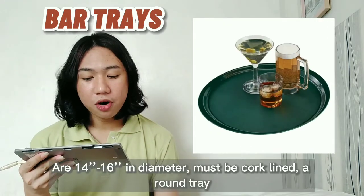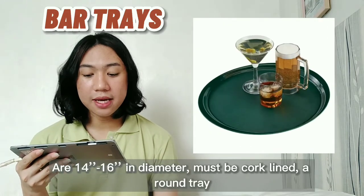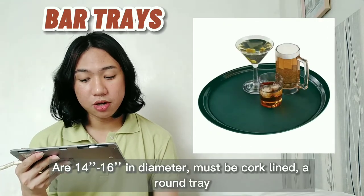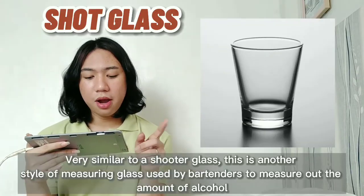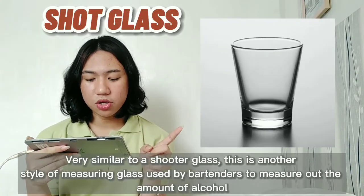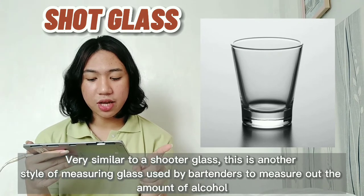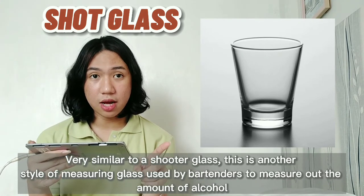Bar trays are 14 inches by 16 inches in diameter. As a substitute, you can use the regular trays you have at home — just put a clean towel on top of them.